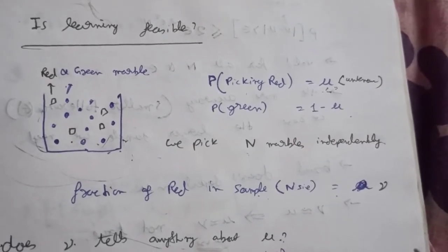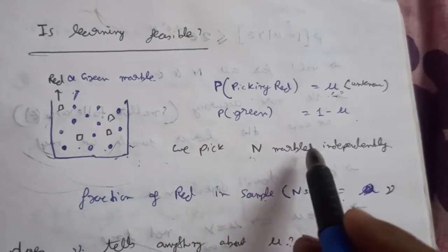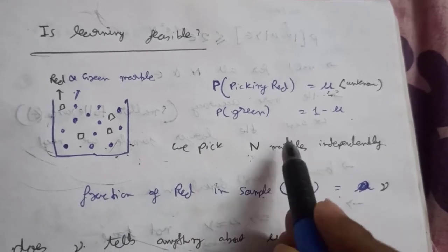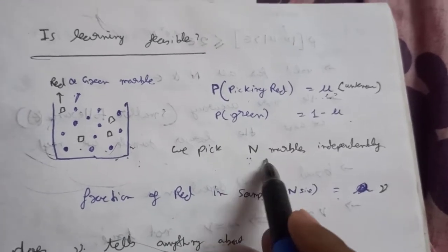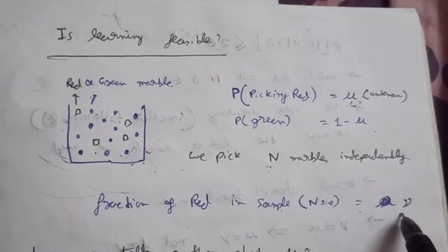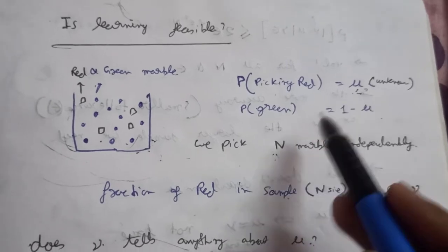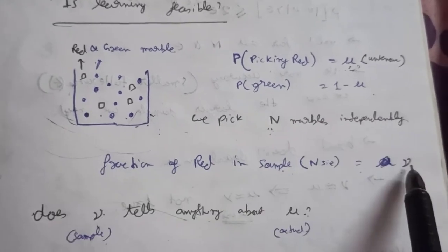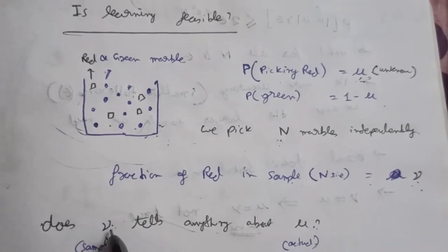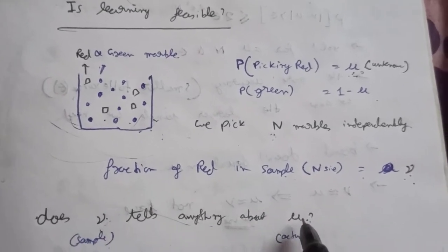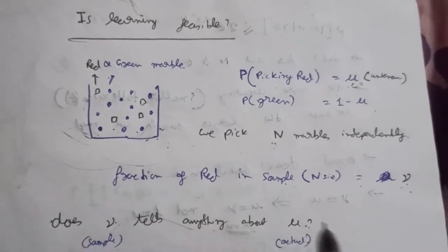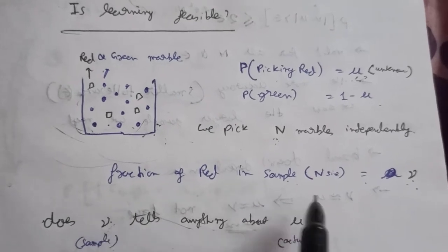So how can we calculate the value of mu — what is the probability of picking a red marble? The approach we can use is to pick capital N number of marbles independently as a sample. Now we are going to check what is the fraction of red marbles in the sample we picked. Suppose the fraction of red marbles in the sample we picked is nu. So is this nu related to mu? Does the value of nu tell us anything about mu?